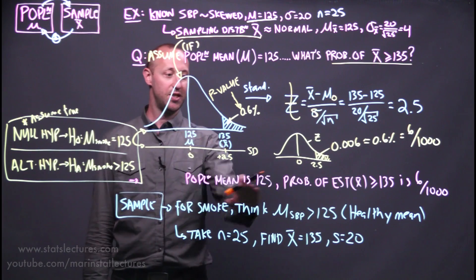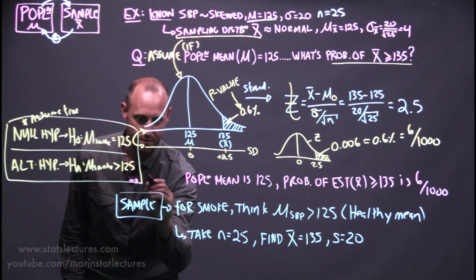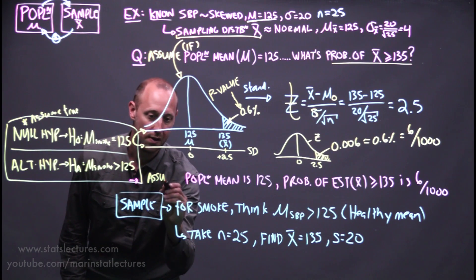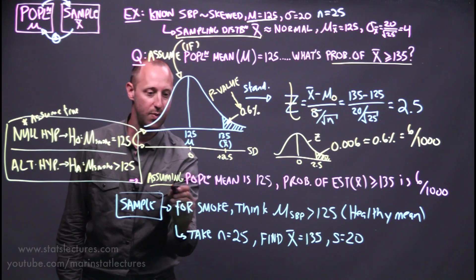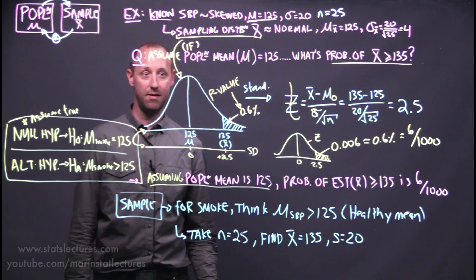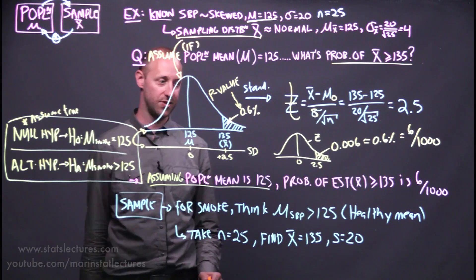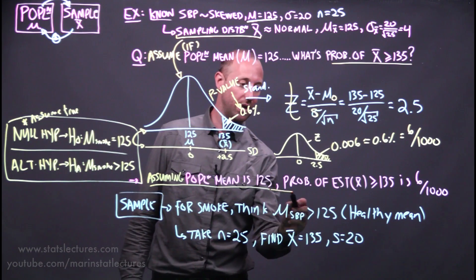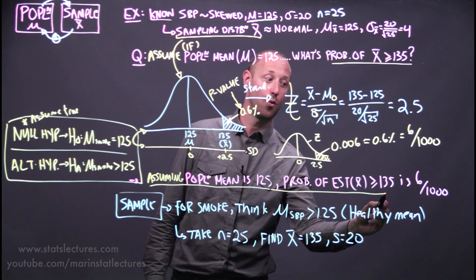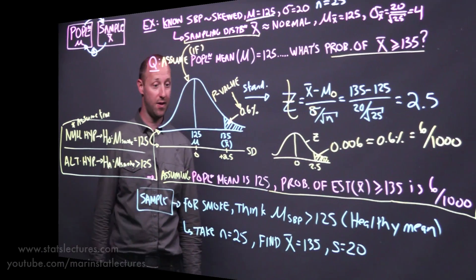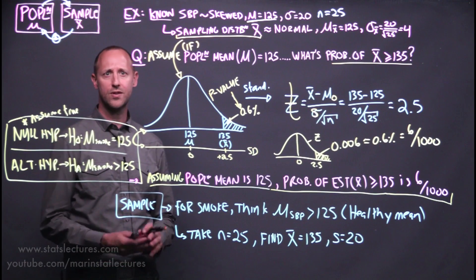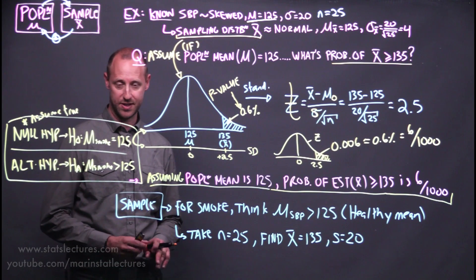So rather than saying the population mean is 125, assuming the population mean is 125, assuming our null hypothesis is true, the probability of seeing an estimate like this show up or one even more extreme is only going to happen about six in a thousand times.